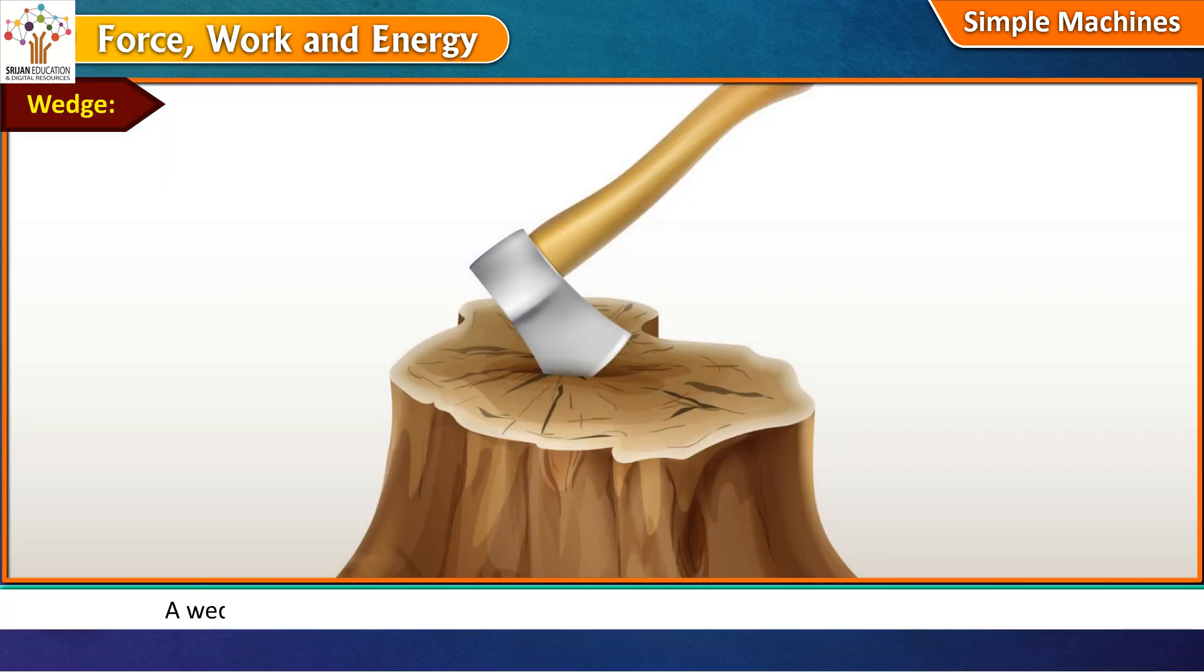Wedge. A wedge is actually a kind of inclined plane. For example, an axe blade is a wedge. The edge of an axe blade can be used to push things apart.